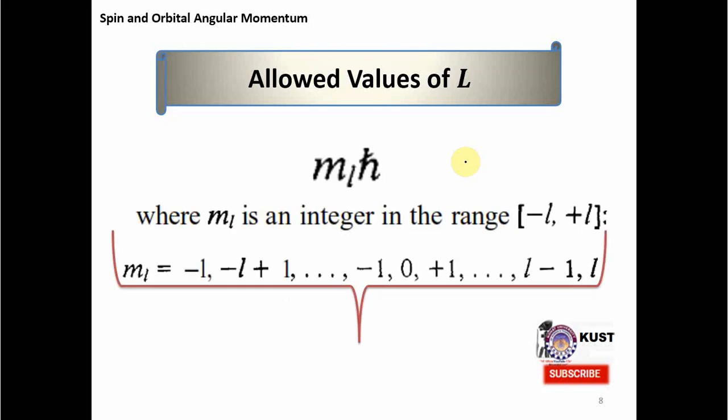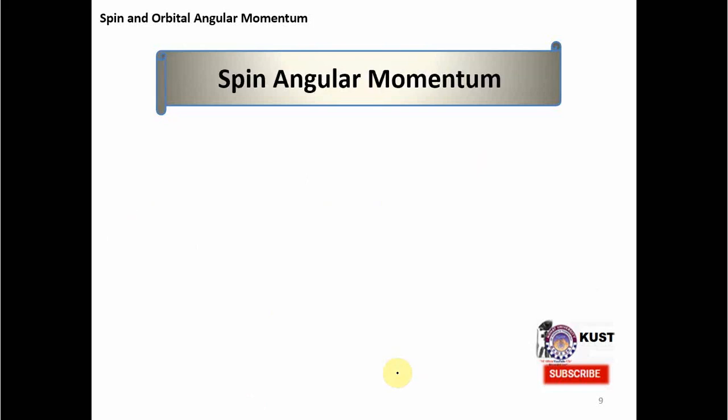The total number of possibilities is 2L+1. After discussing orbital angular momentum and seeing that its components are uncertain and cannot be measured simultaneously, we decided to work with L², which is compatible with any component because its commutator is zero. Now we turn towards spin angular momentum, which is not very different from orbital angular momentum.